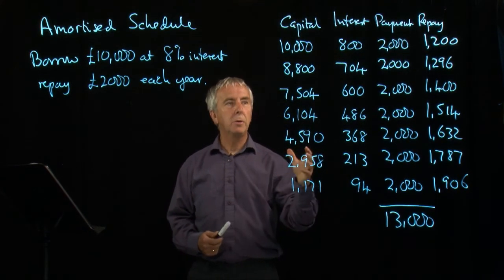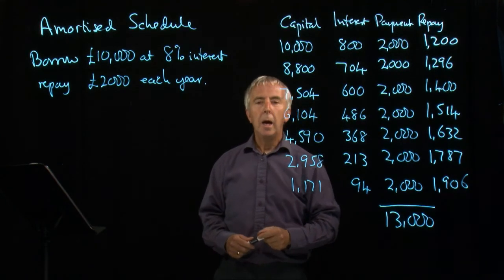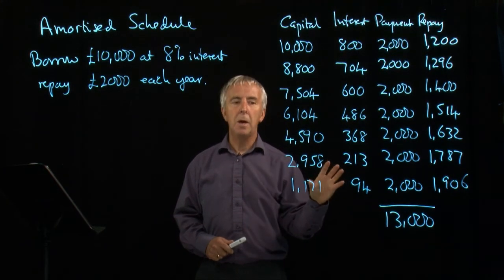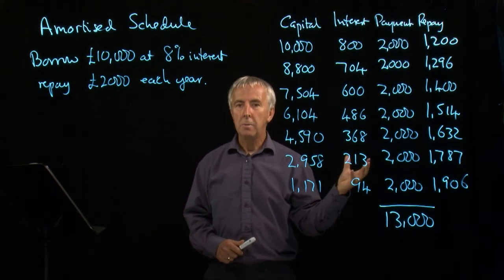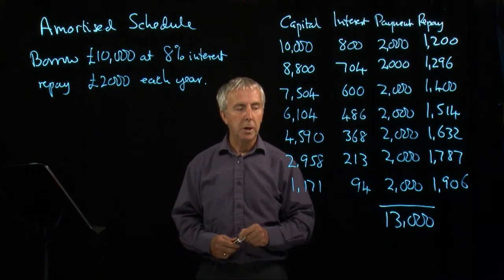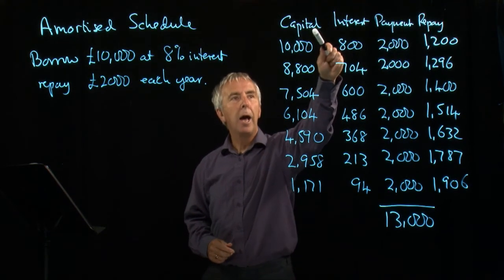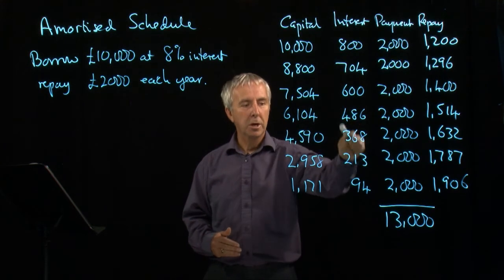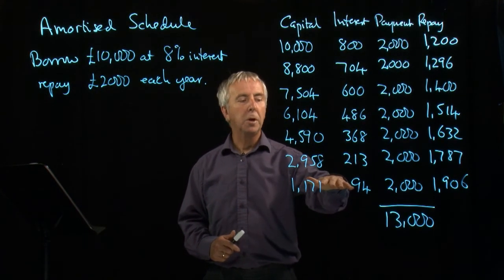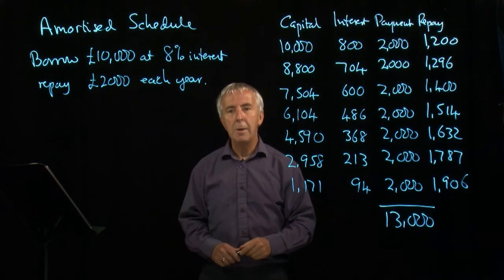The extra £3,000 was the interest we've had to pay over the period. With longer time periods — for example, a mortgage is typically 20 or 25 years — the interest becomes a very significant part; it can even exceed the amount of capital on a 25-year loan. The details depend on the exact interest rate and number of years, but it's quite easy for the total interest to be more than you originally borrowed. This amortised schedule shows how the amount you owe decreases, the interest decreases, and the amount you're repaying each time goes up — and it tells us when the loan can finish. We could do this on a monthly basis and find the exact month when we finally paid off the debt.